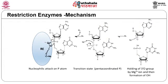Restriction enzymes bind to double-stranded DNA at the specific recognition sequence and cut the phosphodiester bond between two nucleotides on each strand. The mechanism involves a nucleophilic attack by OH on the phosphorus in the phosphodiester bond, making the phosphorus carry an extra negative charge in a transition state, which is then passed to a magnesium ion to stabilize the 3' O, and finally to a proton to form OH.